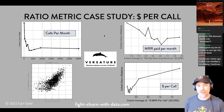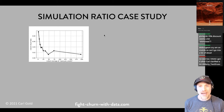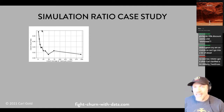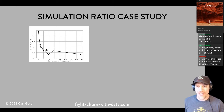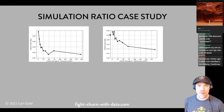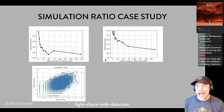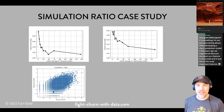That's one example of understanding churn without statistics and regression. Here's a quick example from the simulation — it's a social network, showing churn versus the number of posts per month. This is churn versus the number of ads viewed per month. You'd think viewing ads is bad, but it's another correlation story: viewing ads and posting are highly correlated.